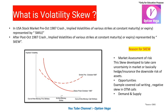When investors buy insurance in the form of OTM puts, they are hedging their portfolio in case the market crashes, saving their profits. The market goes upward by stairs and comes down by a lift — you won't get time to save your portfolio. You have to buy puts if downside risk is there. That is one reason OTM put strikes have very high implied volatility during uncertainty, creating positive skew on the put side and negative skew on the call side.